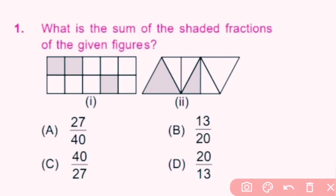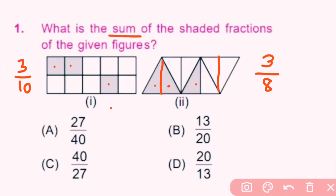Question number 1: What is the sum of the shaded fraction of the given figure? In option 1, there are total 10 parts and out of 10, 3 parts are shaded. In the second figure, there are total 8 equal parts and out of 8, 3 parts are shaded. We have to find their sum: 3 by 10 plus 3 by 8. The denominators are different so we cannot directly add.